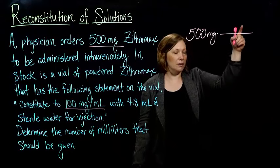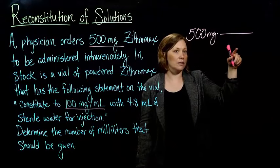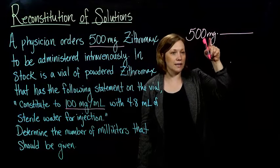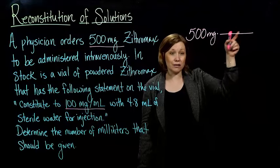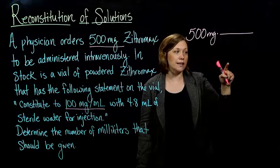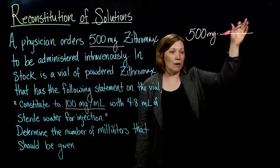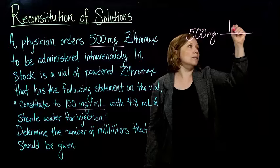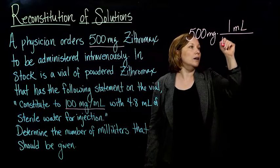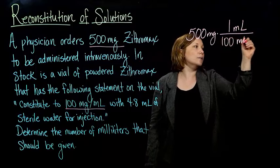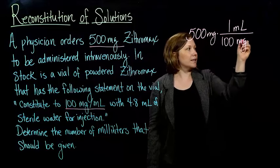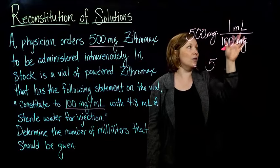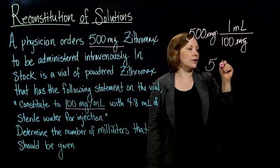What do we want on top — the milliliters or the milligrams? We want the milligrams to go on the bottom because we need them to cancel out. With the milliliters on top, that's exactly what we'll be left with — milliliters is what we want when we're all done. So we put one milliliter on the top and 100 milligrams on the bottom, multiply these together, cancel out the milligrams, and we get 5 milliliters.